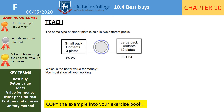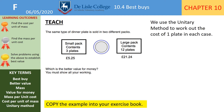The same type of dinner plate is sold in two different packs — this is a previous exam question. A small pack with three plates for £5.25 and a large pack with 12 plates for £21.24. Which is the better value for money? You must show all your working out. Copy this into your exercise book. We're going to use the unitary method to work out the cost of one plate in each case.